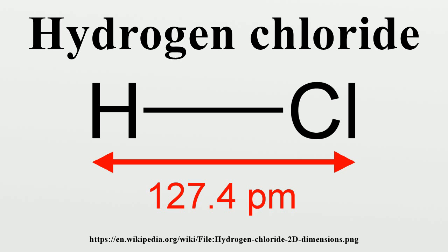When heated above 200°C, the reaction proceeds further: NaCl + NaHSO4 → HCl + Na2SO4. For such generators to function, the reagent should be dry. Hydrogen chloride can also be prepared by the hydrolysis of certain reactive chloride compounds such as phosphorus chlorides, thionyl chloride, and acyl chlorides.